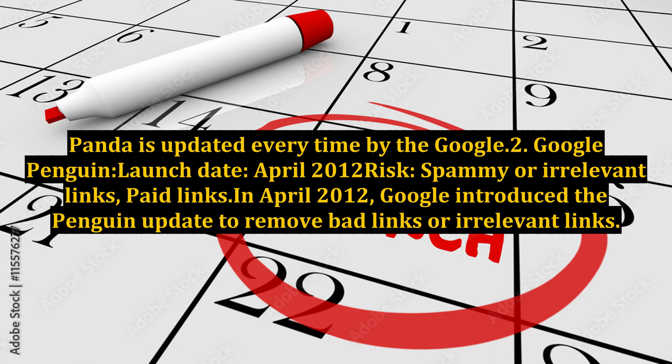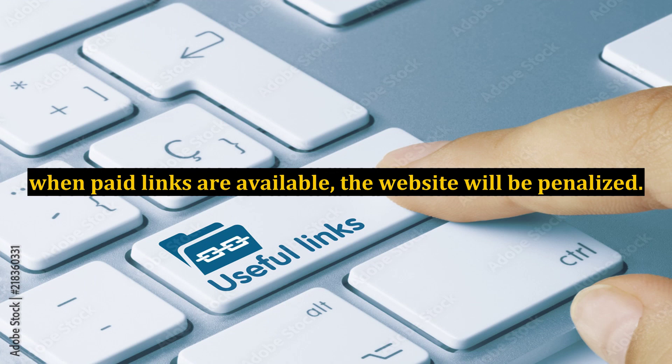Point 2. Google Penguin — Launch Date: April 2012. Risk: Spammy or Irrelevant Links, Paid Links. In April 2012, Google introduced the Penguin Update to remove bad links or irrelevant links. When paid links are detected, the website will be penalized. When a new Penguin Update is released, sites that have taken action to remove bad links can use the Google Disavow Links Tool.